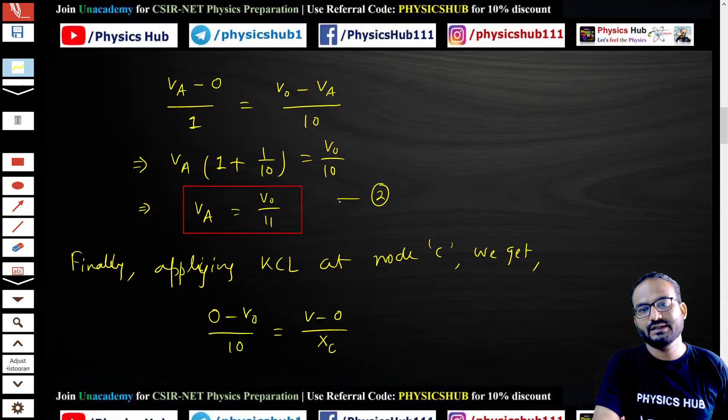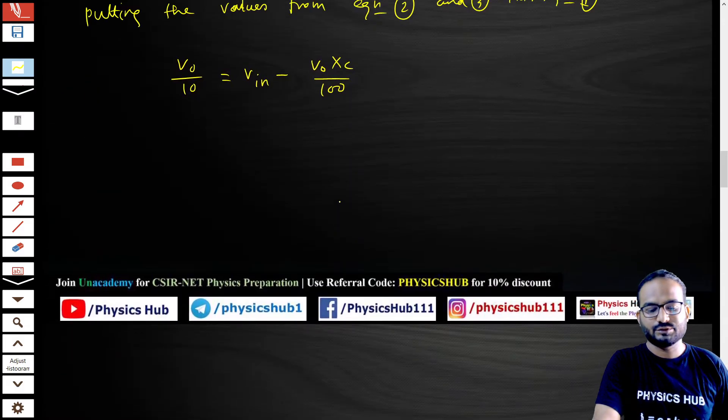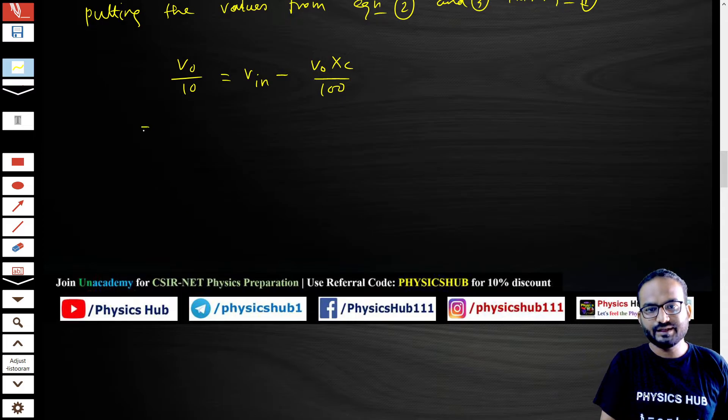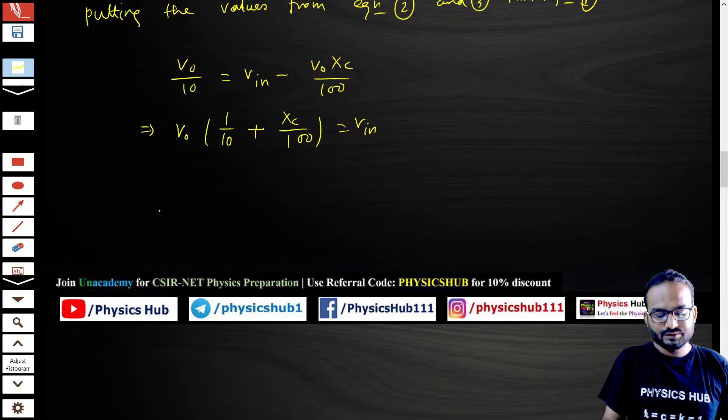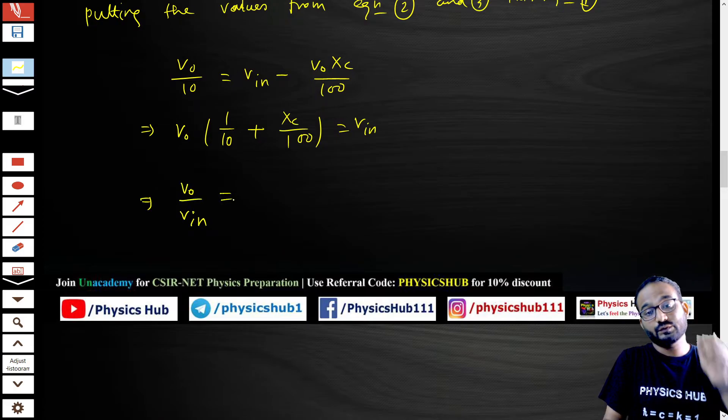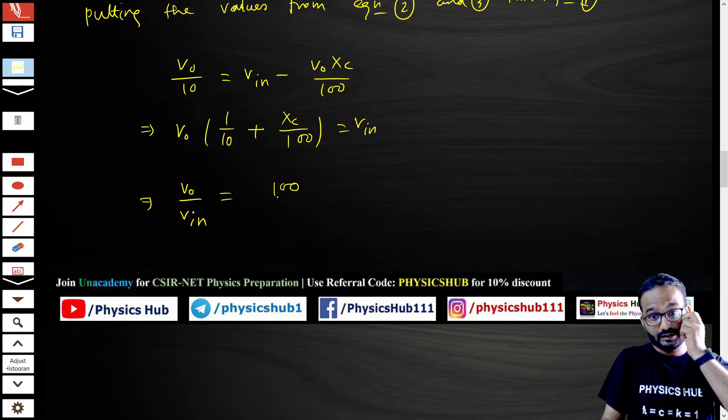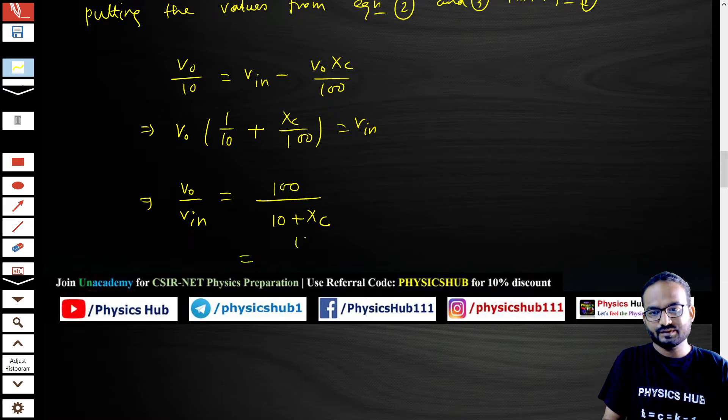If you put the values of 2 and 3 into equation 1, you will get this equation. We take V_naught common: 1 by 10 plus X_C by 100 equals V_input. From here we get a complex expression: V_output by V_input equals 100 divided by 10 plus X_C.